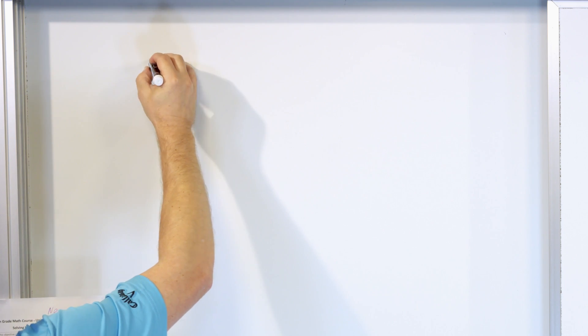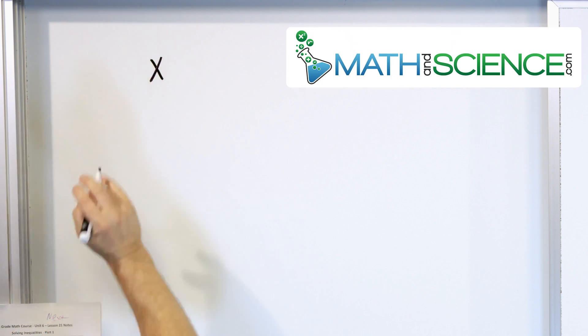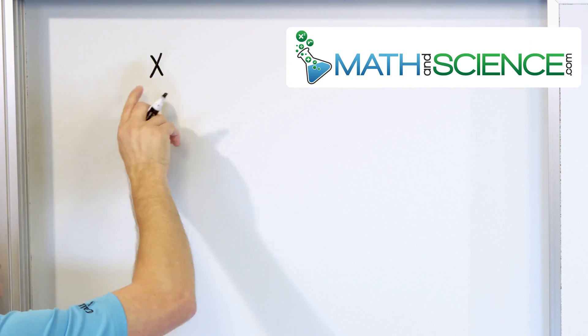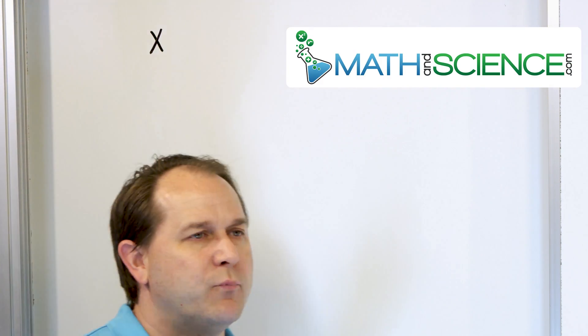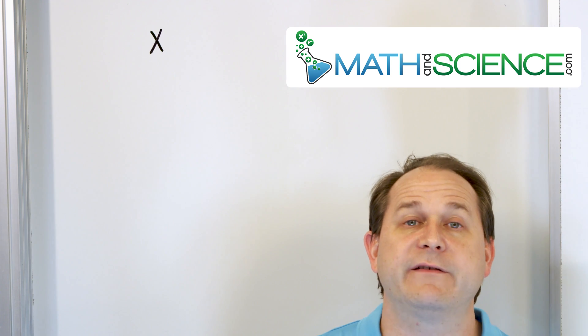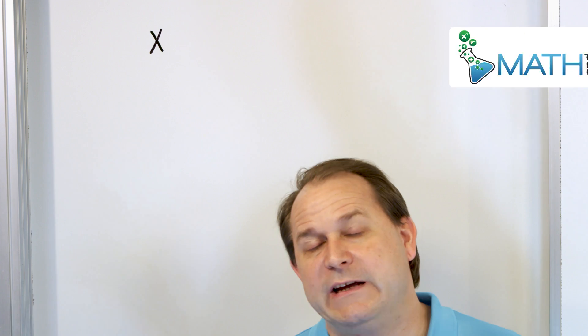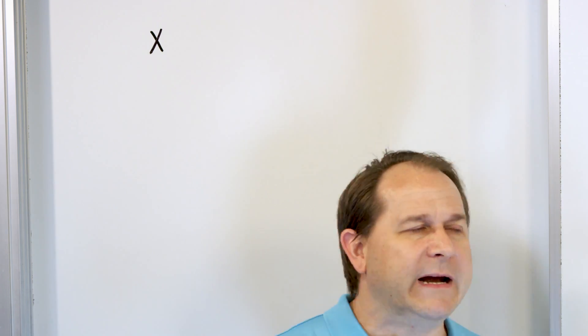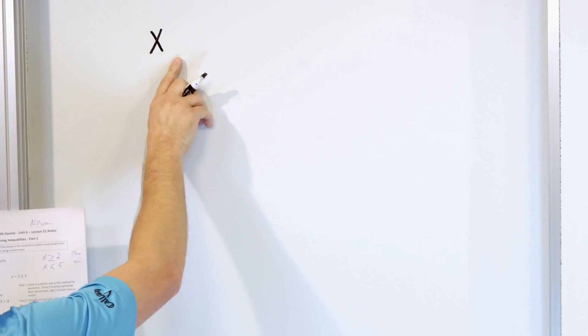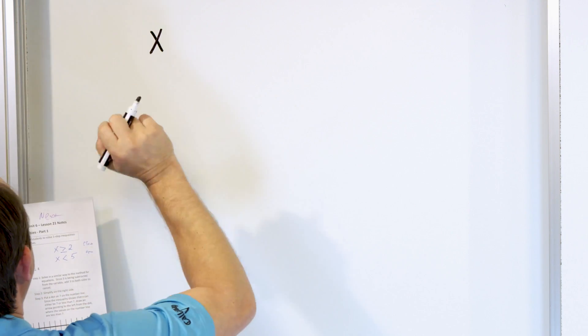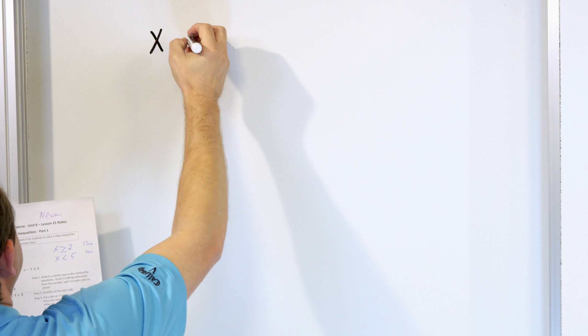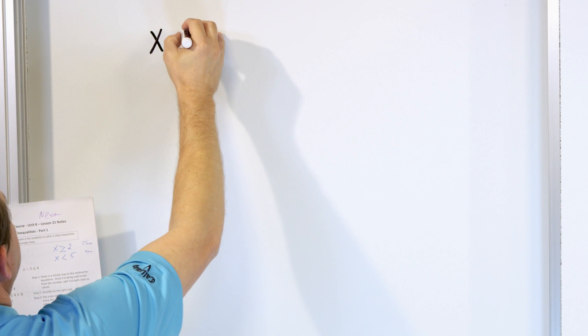Here I have a variable x. You know that x, when you don't have anything else written down, it just means it's a placeholder for a number. Could be five, could be three, could be 17, could be four. But if I add something to the right of this, then we'll lock it down and it'll be a very specific value.